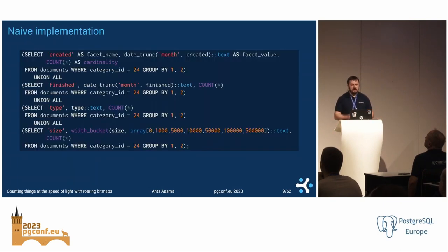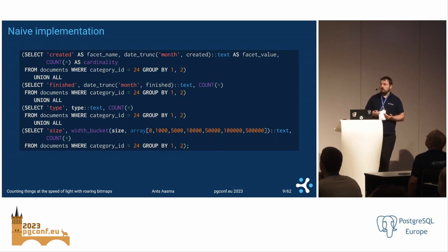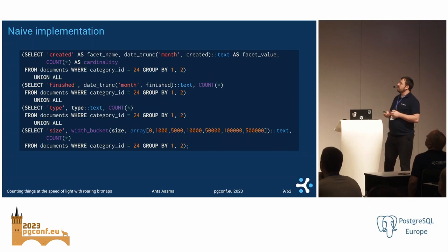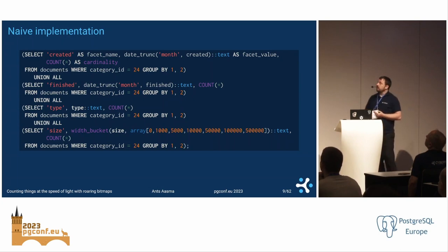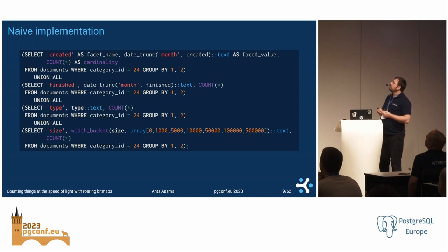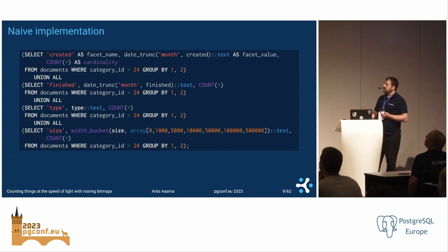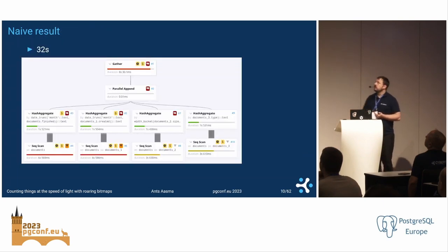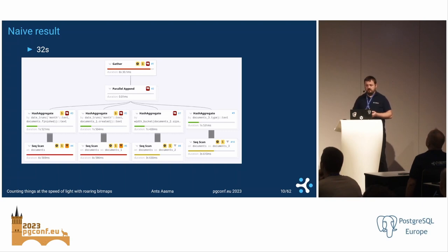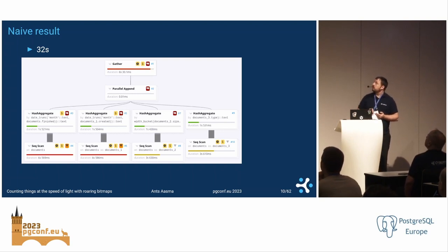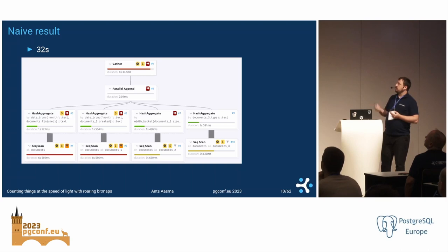Let's do a naive implementation of faceting. Because we are good developers, we will do it in a single query and union all everything together so we don't do multiple database round trips. For each facet we want to have, we have a query that just selects the count as we had on the previous slide. The execution time for this query is 32 seconds, which is far from interactive. The user will have gone away to get a coffee by then. The good news is Postgres was able to use parallel query to make things faster, otherwise it would have taken even more time.